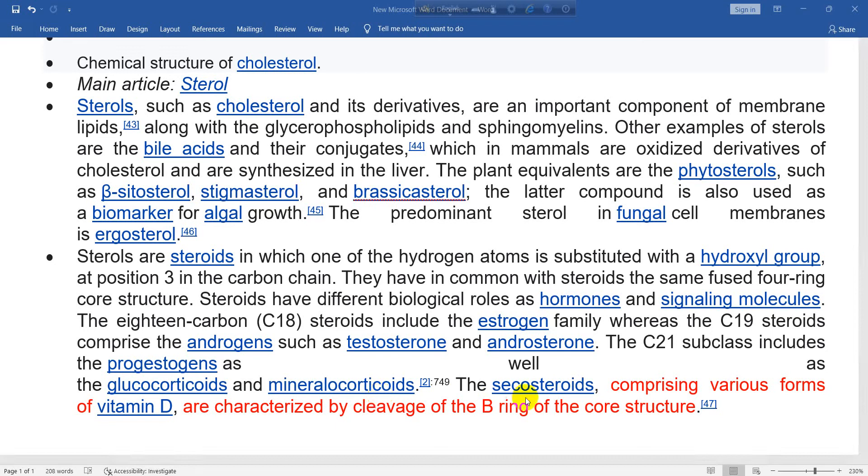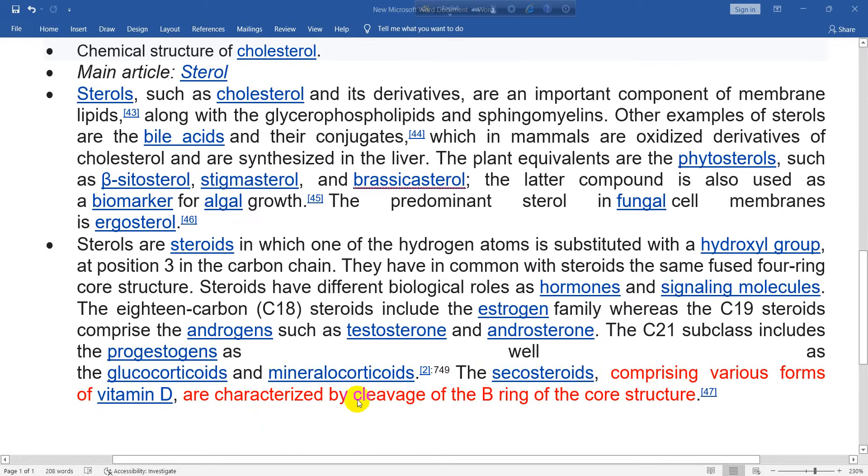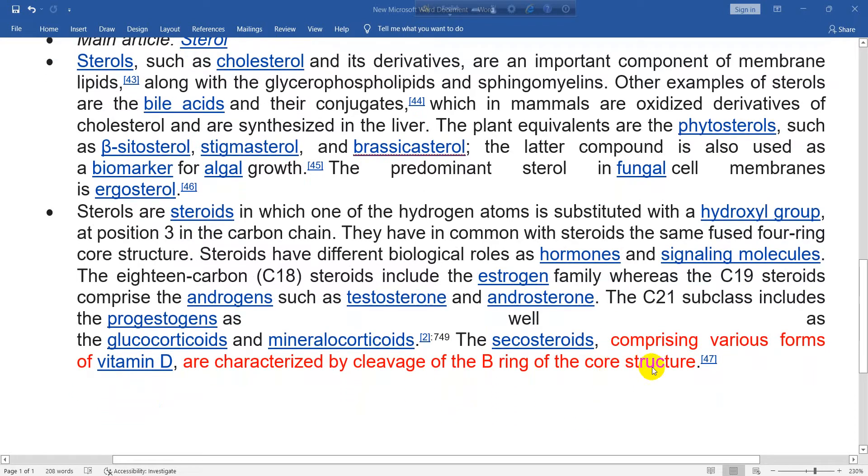The secosteroids comprising various forms of vitamin D are characterized by cleavage of the B ring of the core structure.